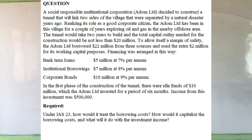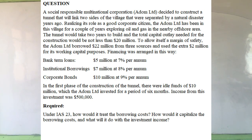A socially responsible multinational corporation, Adam Limited, decided to construct a tunnel that will link two sides of a village separated by a natural disaster years ago. Realizing its role as a good corporate citizen, Adam Limited has been in the village for a couple of years exploring oil and gas plants in the nearby offshore area. The tunnel would take two years to build, and the total capital outlay needed for the construction would be not less than $20 million.